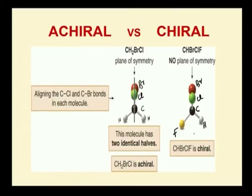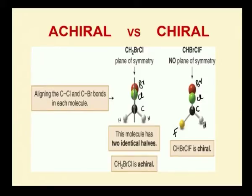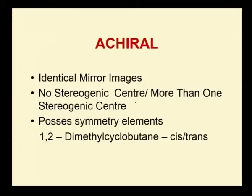We can conclude: an achiral molecule has a plane passing through it and it will cut into two identical halves, whereas a chiral molecule does not have a plane of symmetry. An achiral molecule has identical mirror images, either no stereogenic centre or more than one stereogenic centre, and it possesses elements of symmetry.